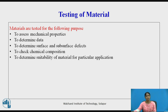As we have already seen in the previous video, this is the reason why testing of material is required. It has a number of factors for which the material needs to be tested — for example, to assess the mechanical properties, to determine the data, to determine surface and subsurface defects, to check chemical composition, and to determine suitability of material for a particular application.